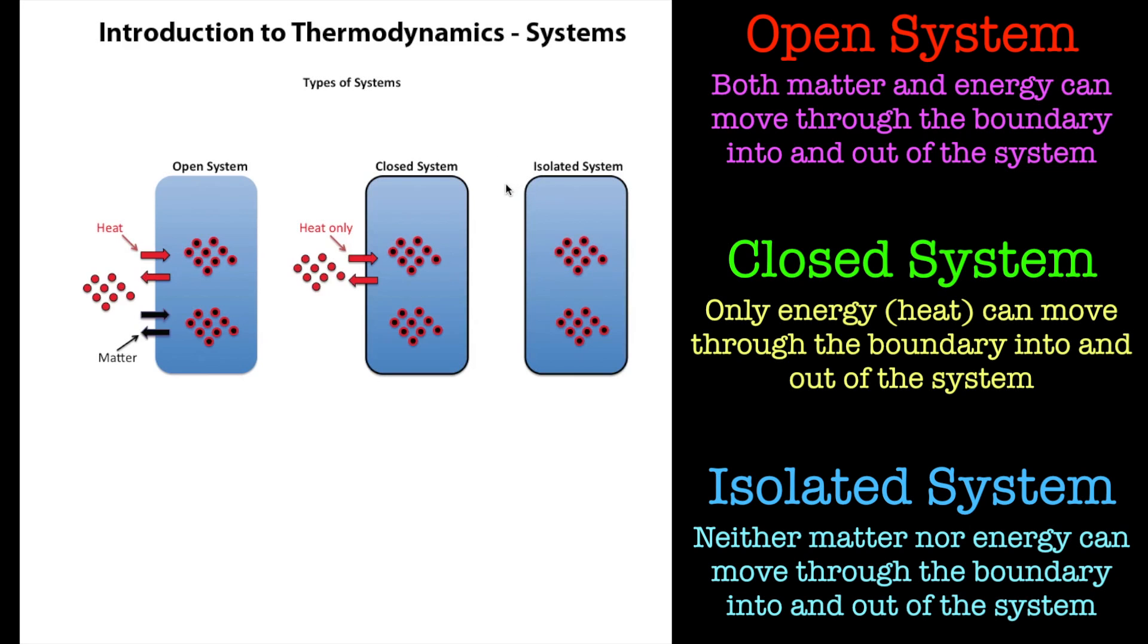An isolated system, heat can't get in, heat can't get out, matter can't get in, matter can't get out. Basically, if anything happens inside that system now, so if we had a chemical reaction, for example, that had a chemical process generated gas, then the pressure would build up inside that.